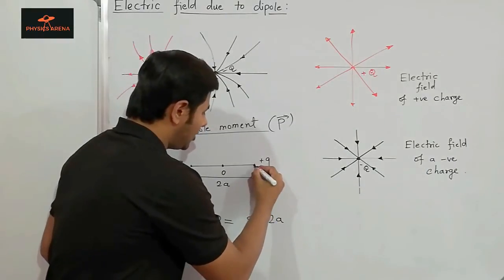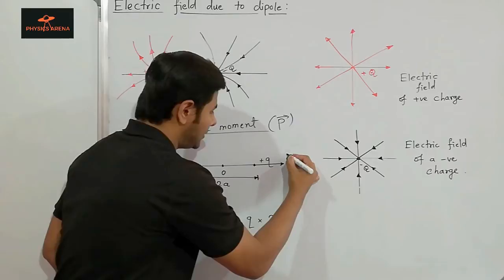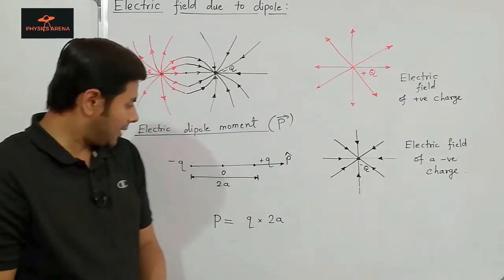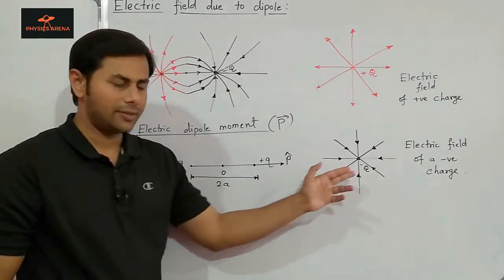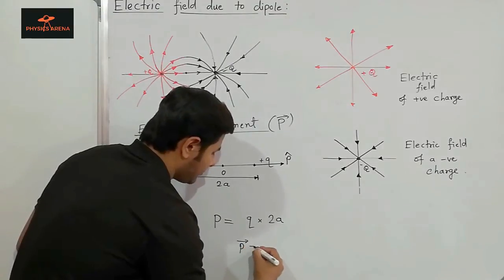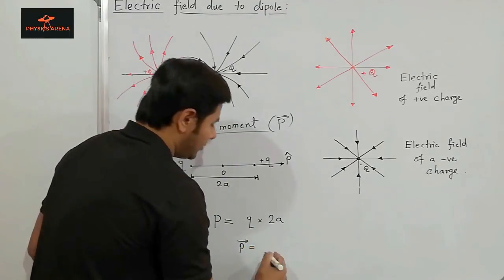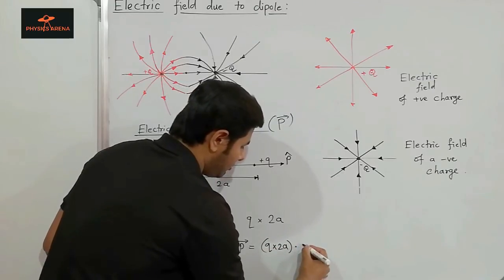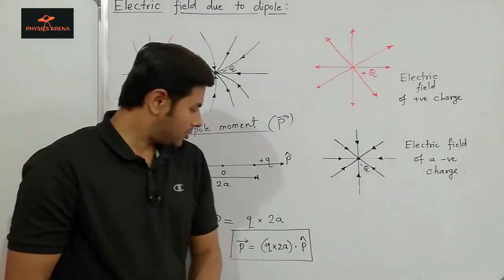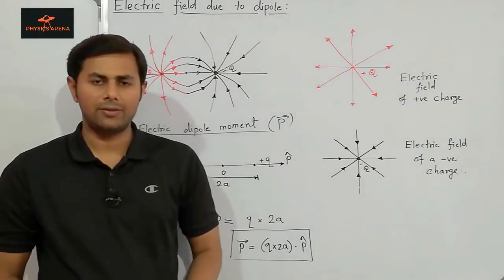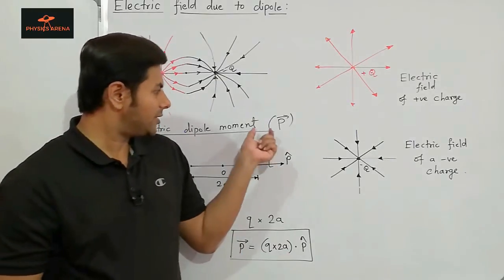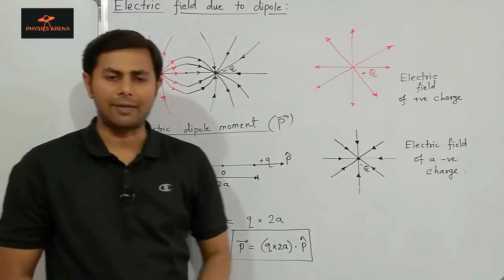The unit vector along P-bar is directed from -q to +q — this is P-cap, the unit vector along the direction of P-bar. So P-bar equals q multiplied by 2a times P-cap. This quantity will appear very often in the formulae for the electric field when we discuss the electric field of an electric dipole.